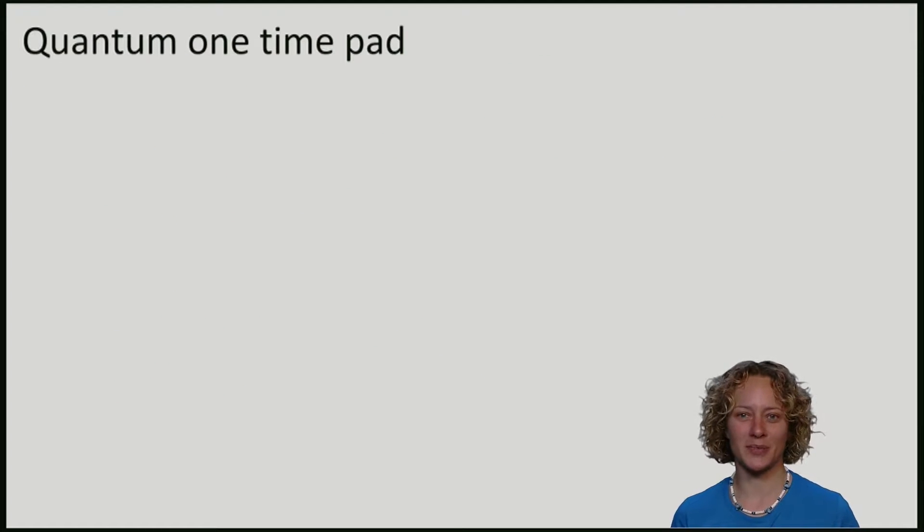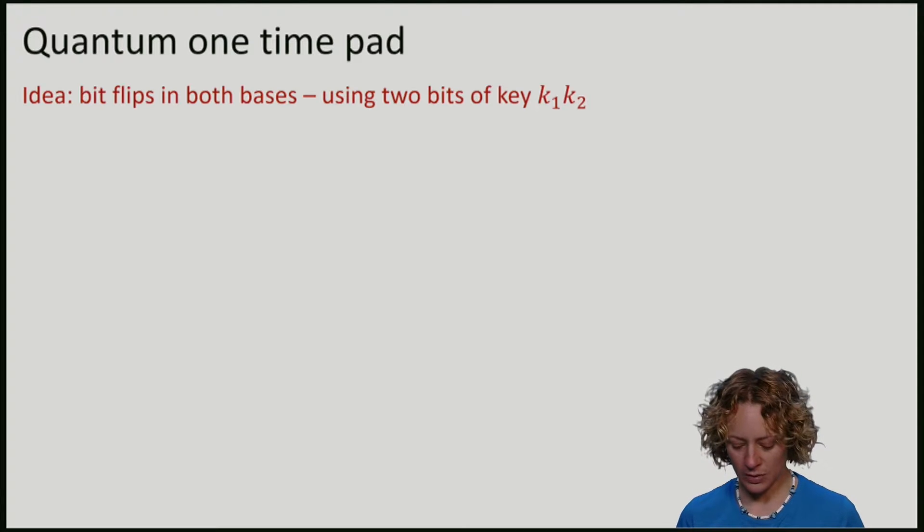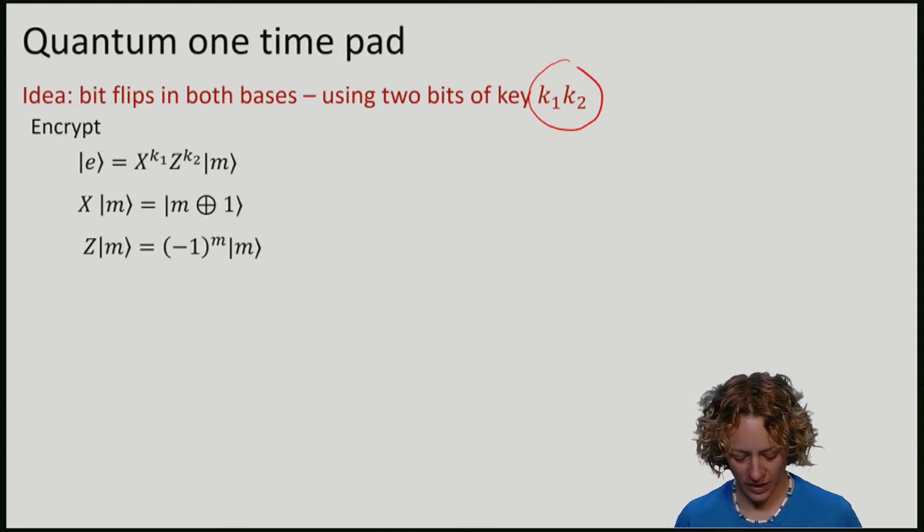So we have to do more than apply either X or Z. The idea of the quantum one-time pad is now very simple. Namely, instead of applying either X or Z, we will apply both of them. Z is good to encrypt the Hadamard basis. X is good to encrypt the standard basis. And we will see that both of them together are sufficient to encrypt an arbitrary qubit. Of course, because we now potentially apply two operators, we will need two bits of classical key. Two bits to encrypt just one qubit. So what this looks like is that to our message M, or in general to our quantum state psi, we will apply Z and X depending on the key bits.